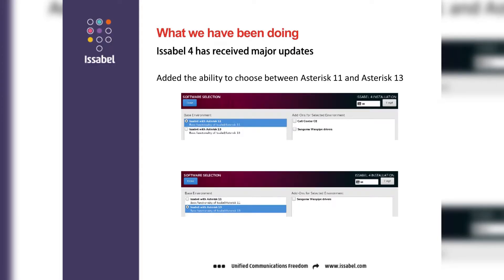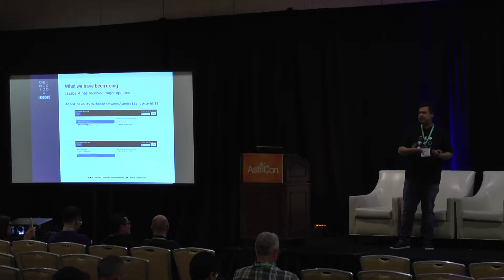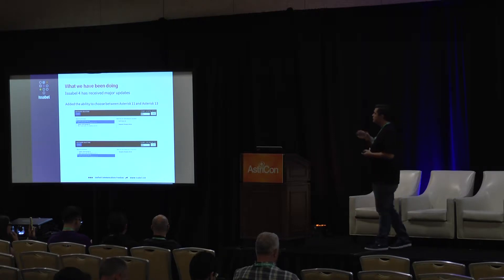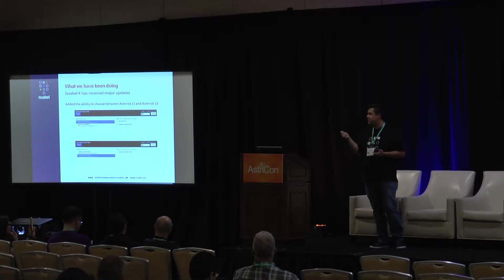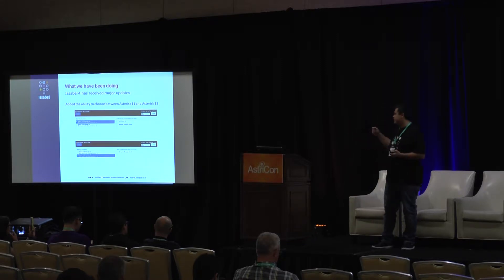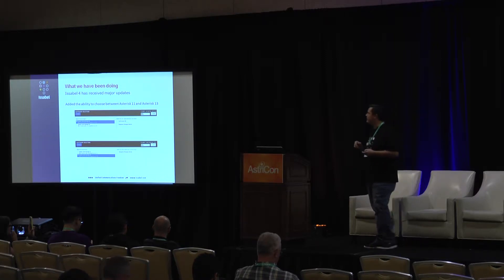With this new version, we introduced the ability to install not only Asterisk 11 but also Asterisk 13. The main base of Elastix was Asterisk 11, so we kept that for support and continuity. But we also introduced the capability of installing Asterisk 13. When installing from the ISO, you can decide whether to install Asterisk 11 with the call center, or Asterisk 13. Asterisk 13 also has the ability of swapping versions.